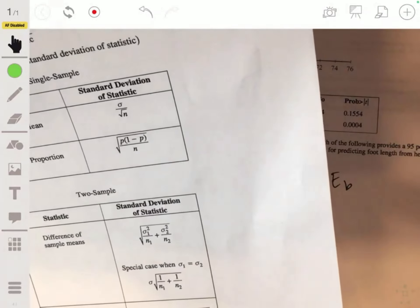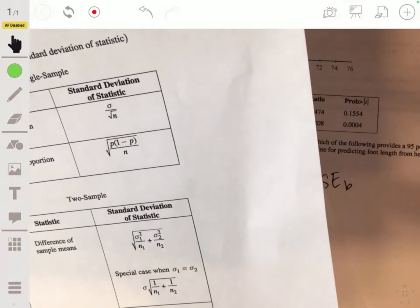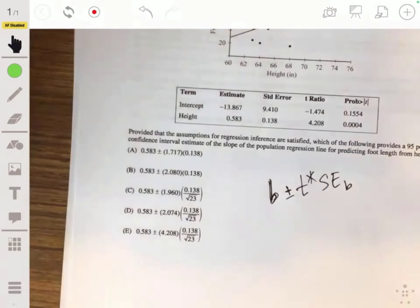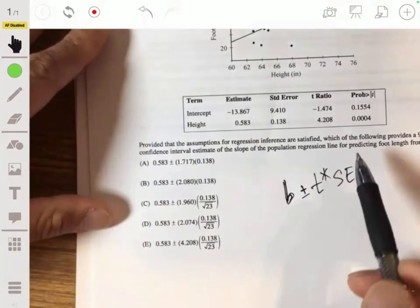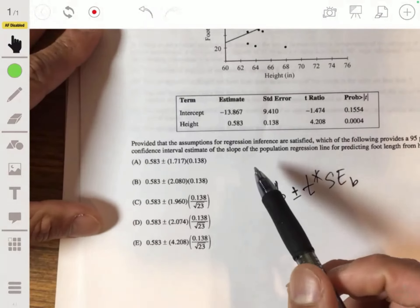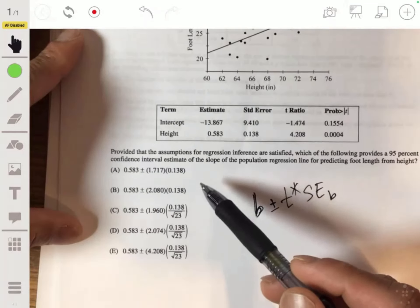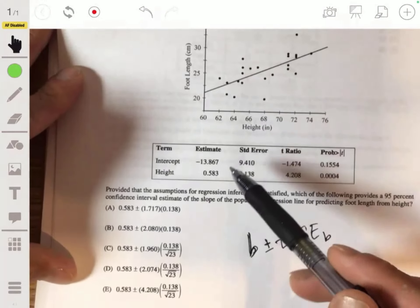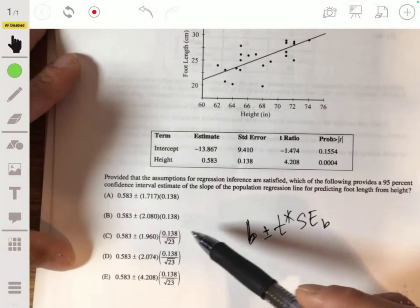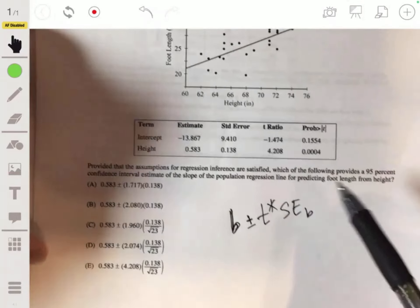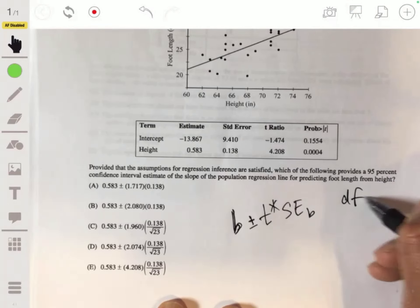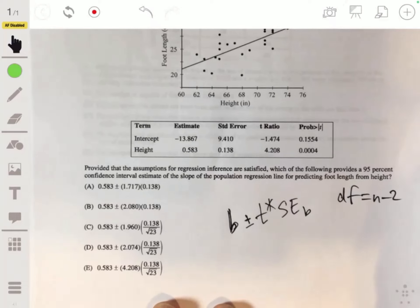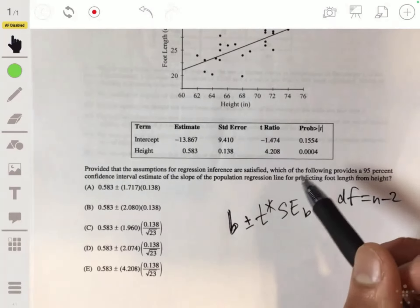But again, just thinking logically, you can figure out - you're trying to estimate the foot length, that's our 0.583. And then the t star you should know because you're doing the 95% confidence interval, but you need the degrees of freedom to be n minus 2. So you're going to match up the correct t star. And once you get the correct t star, you're fine, because you don't even need to know that. You don't even need to be sure about the standard error, because there's only going to be one of the correct t stars here, the 2.08.